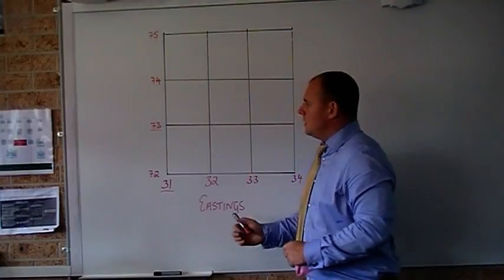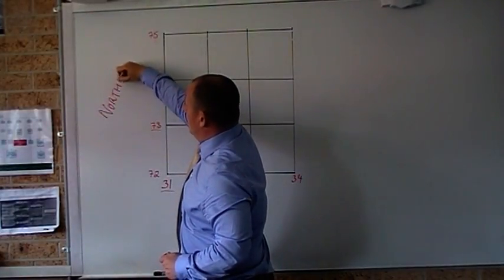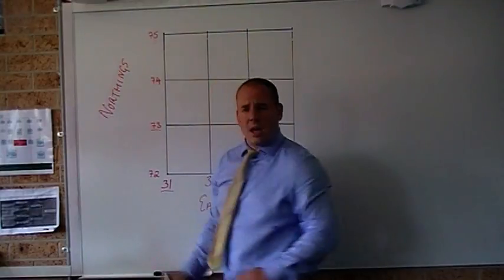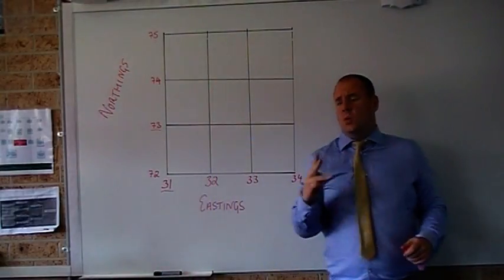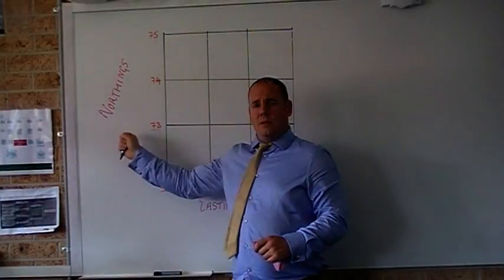We've got our grid, we've got our eastings, we've got our northings. Now the difference between an area reference and a grid reference is two extra numbers and they come from eastings and northings.